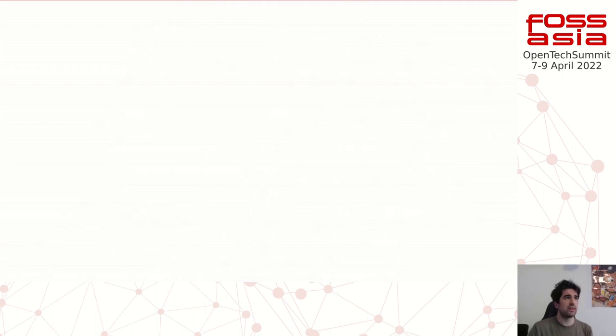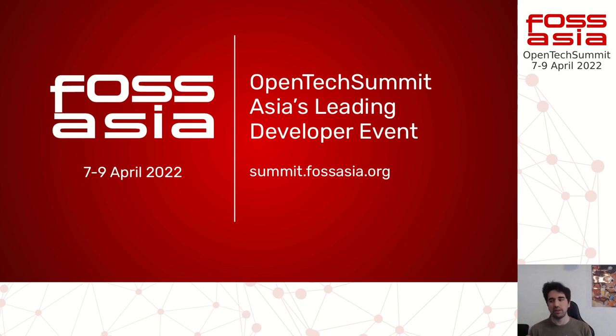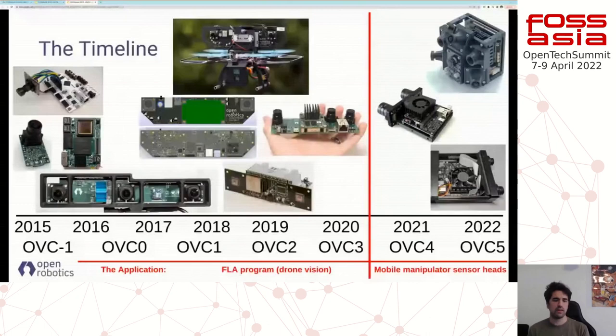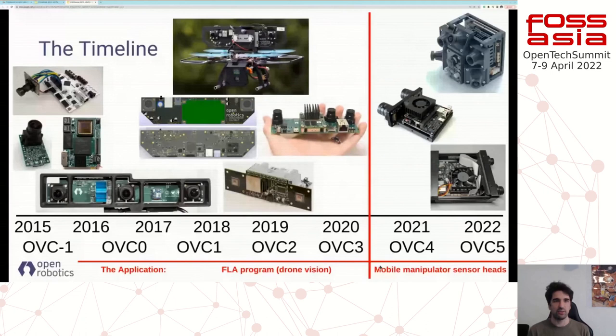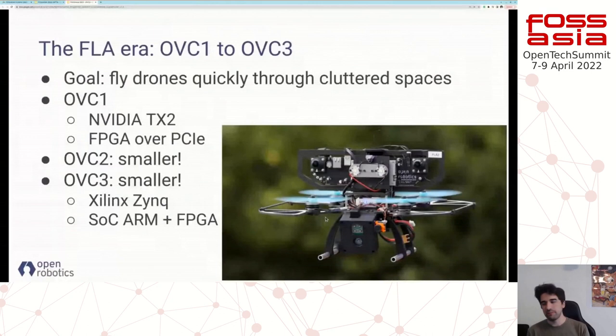You can see one of our computers flying on a drone — this was in collaboration with the University of Pennsylvania. In this case the constraints were having good global shutter images and a very small and light vision system. In the last two years we moved into a different direction, looking into mobile manipulator sensor heads. Since we're working with a ground robot we're not really constrained by size or weight, but instead we focused on flexibility and expandability of the platform.